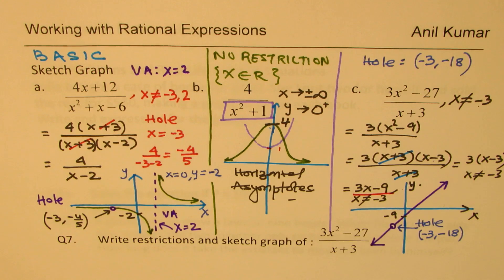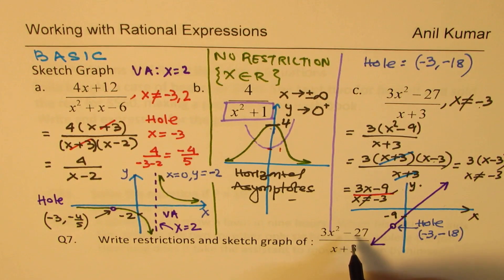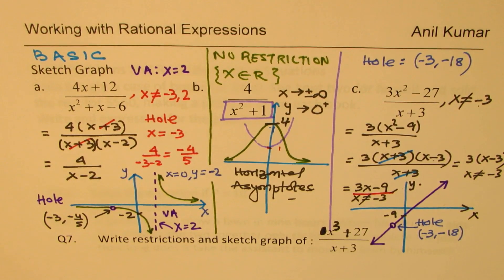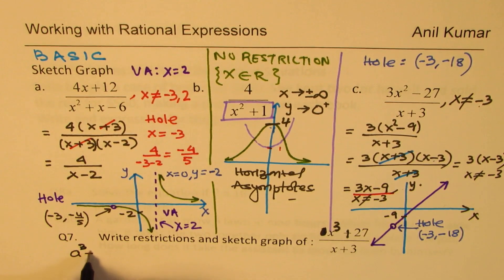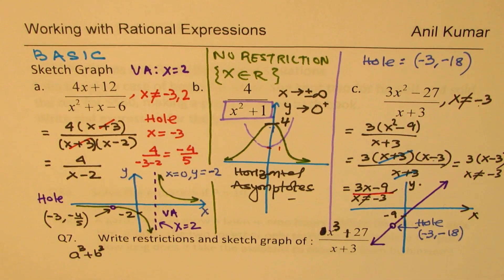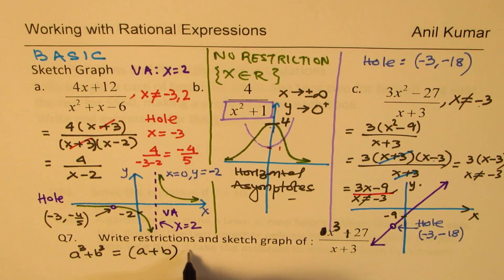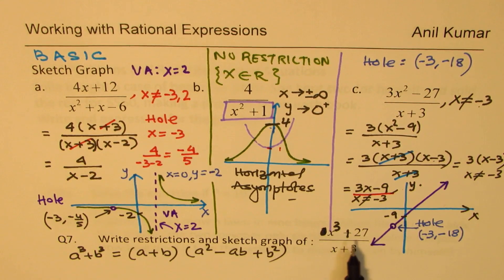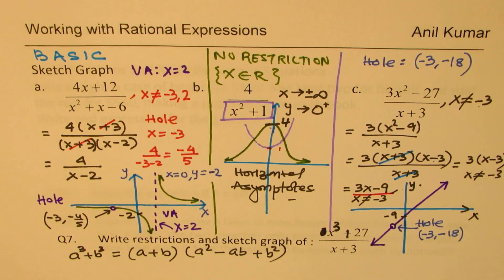Actually, that's the same example we just did, so let me change the question. The new question is: sketch x³ + 27 over x + 3. Recall that a³ + b³ = (a + b)(a² - ab + b²). That expansion will help you factor the numerator. Try this on your own, factor it, then get your graph. Feel free to write your comments, share your views, and if you like and subscribe to my videos that would be great. Thanks for watching and all the best!